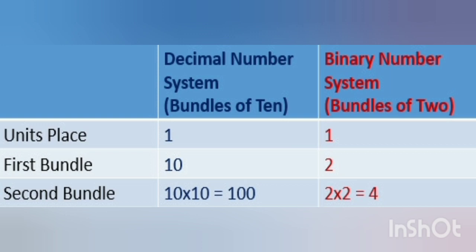Second bundle, 10 x 10 equals 100. While in binary, it is 2 x 2 equals 4. So we can create binary numbers using a combination of off and on bits. Add the value of on bits to get the number.